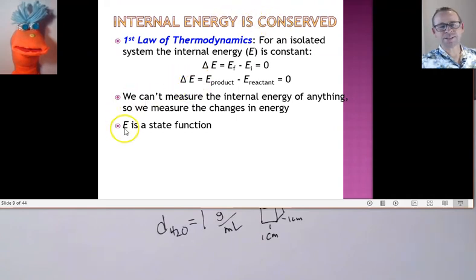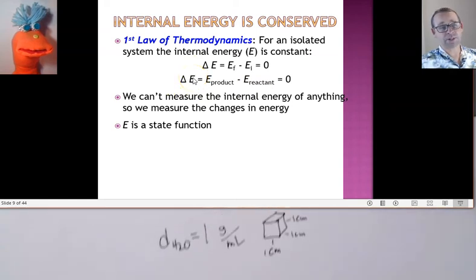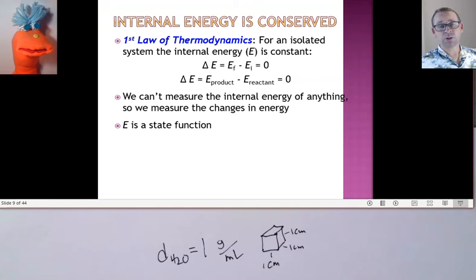So, E, we call it a state function because all it's doing is measuring the energy from the products or the final state compared to the initial state or the reactants state. And we call delta E, or really delta anything for that matter. We're going to be talking about delta T for change in temperature, delta H for change in the heat energy component. But delta E is always, or delta anything is always products or final, whatever it is, minus initial or the reactants when we're talking about a reaction.